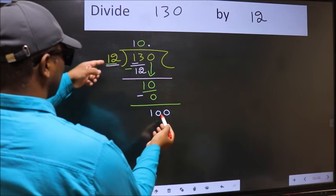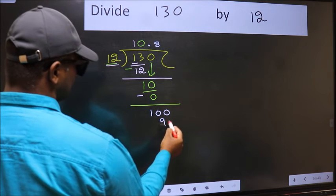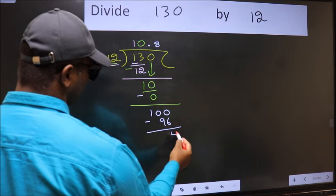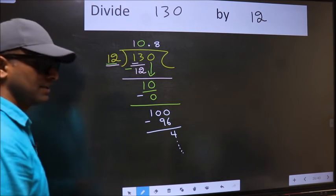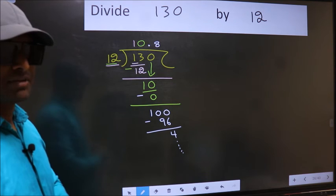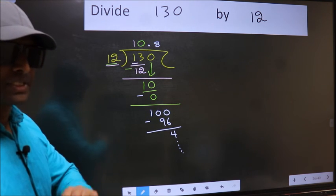A number close to 100 in 12 table is 12, 8, 96. Now you should subtract. You get 4 and continue the division. I am not doing that. Did you understand where the mistake happens? You should not do that mistake.